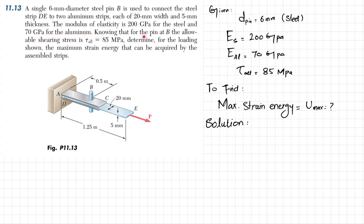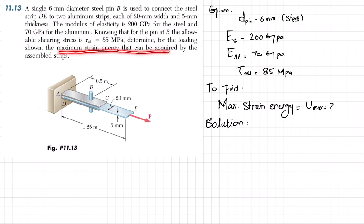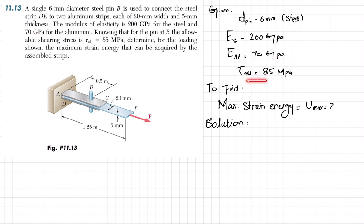Knowing that the allowable shearing stress for the pin at B is 85 MPa, determine the maximum strain energy that can be acquired by the assembly. The given data: diameter of pin is 6 mm, E of steel is 200 GPa, E of aluminum is 70 GPa, and allowable shearing stress is 85 MPa. We need to determine the maximum strain energy.